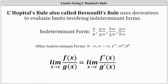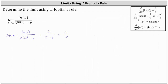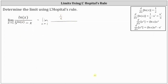Going back to our example, now that we know we have one of the indeterminate forms where L'Hôpital's rule applies, the given limit is equal to the limit as x approaches one of the derivative of the numerator divided by the derivative of the denominator. The derivative of natural log x is one divided by x. The derivative of five to the power of natural log x minus x equals natural log five times five to the power of natural log x times the derivative of natural log x, which is one divided by x, minus one from the derivative of x.